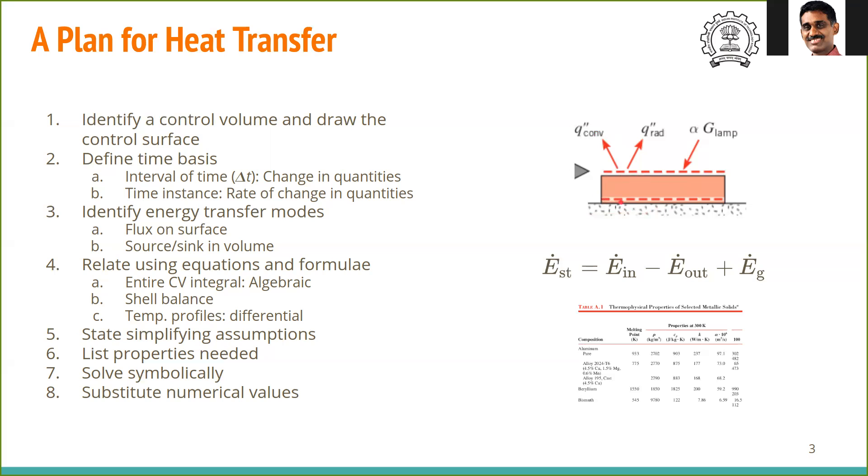Once we have written this, we might have the entire generic set of equations. Then we can go and state the assumptions. For a given condition, we have to try and simplify different conditions so that we can solve it easily. And once you've stated the assumptions, you will also be able to list out the properties that are needed. If there is conduction, what is the conductivity, emissivity, absorptivity, and if there is convection, the heat transfer coefficient and so on.